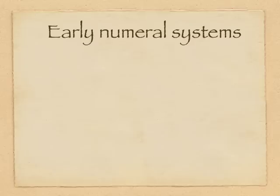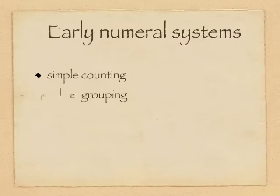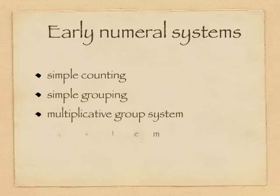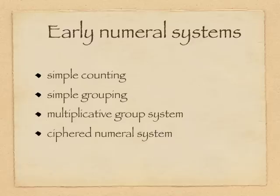This lecture is on primitive counting. Early numeral systems fall into five broad categories: simple counting, simple grouping, a multiplicative group system, a cipher numeral system, or the modern positional numeral system. We will look at each of these in turn.